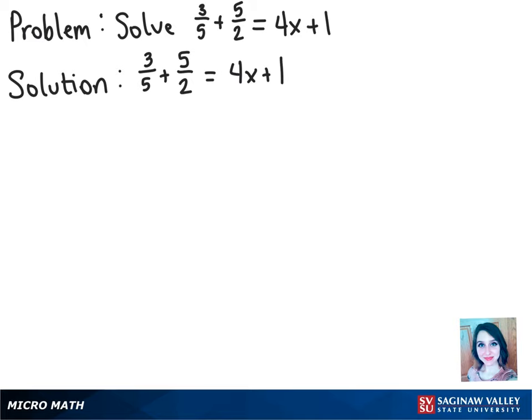And instead of using it to combine the fractions, we're going to use it to get rid of them, because 2 and 5 both go into 10, so it'll just cancel. So we'll multiply 10 by both sides, because whatever you do on one side of the equation, you do to the other.